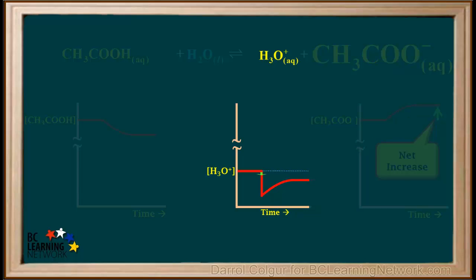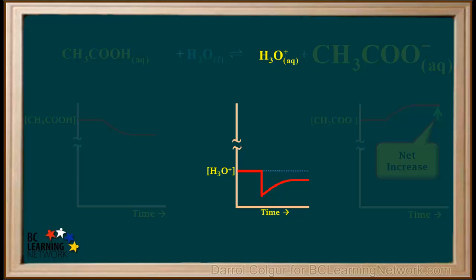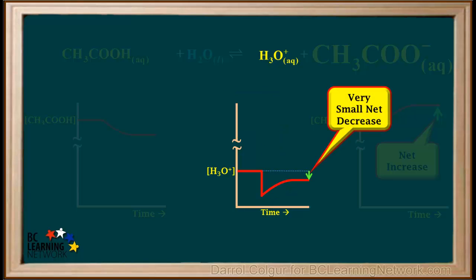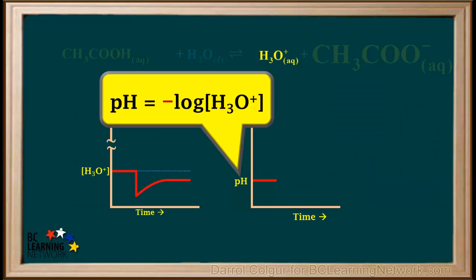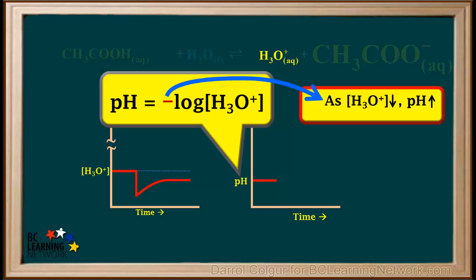The concentration of hydronium dropped rapidly when the base was added. As the equilibrium shifted to the right and buffering took place, the hydronium ion concentration gradually increased in order to partially compensate for the drop. So in the overall process, the hydronium ion concentration showed a very small net decrease. Remember, pH is the negative log of the hydronium ion concentration. The negative sign means as the concentration of H3O+ goes down, the pH goes up.